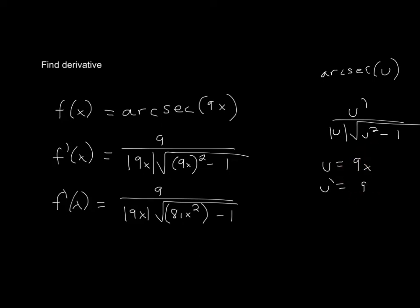If we carry this out, it's going to be derivative of the inside, because it's u prime. That's going to be 9, so u prime is 9. Absolute value of u - I said that u is 9x, so it's going to be 9x.